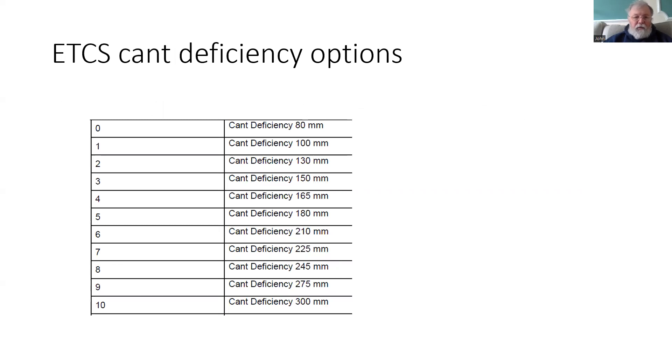ETCS allows speed profiles to be categorised for trains able to cope with a cant deficiency of 80 millimeters, 100 millimeters, all the way up to tilting trains with 300 millimeters.